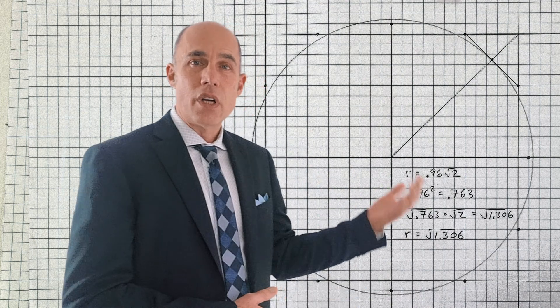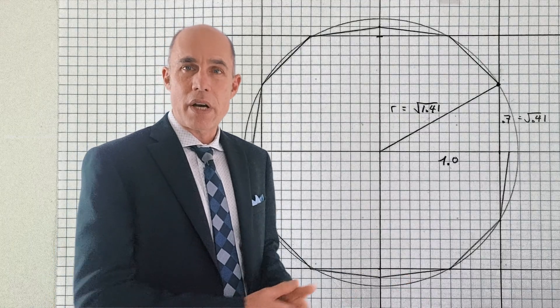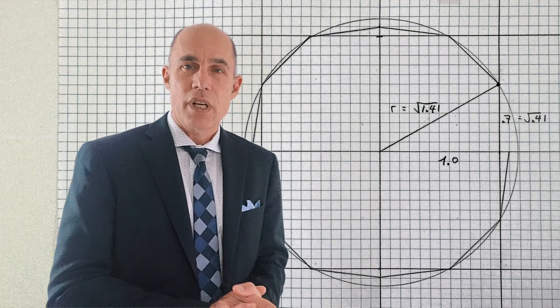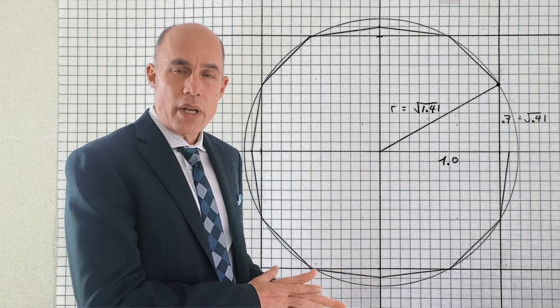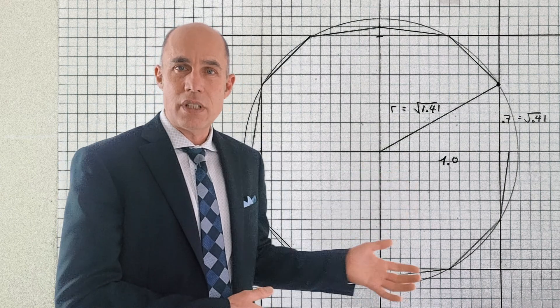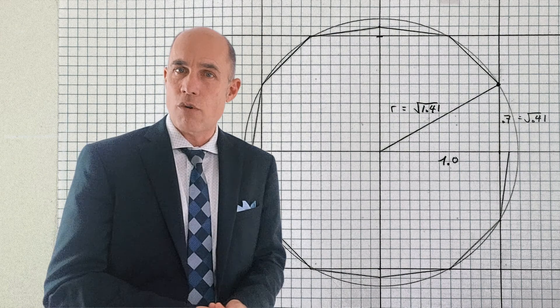So now we're going to look at the outer circle that's formed by the eight points that make up, in a way, the corners of the pattern. We looked at that triangle already. The hypotenuse of this triangle becomes the radius of that circle. So we can see that's √1.41.